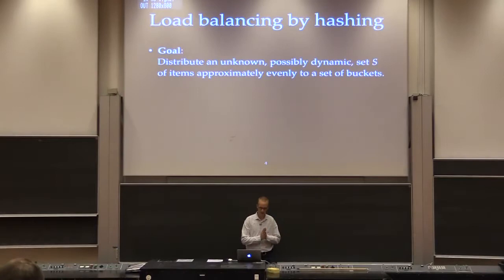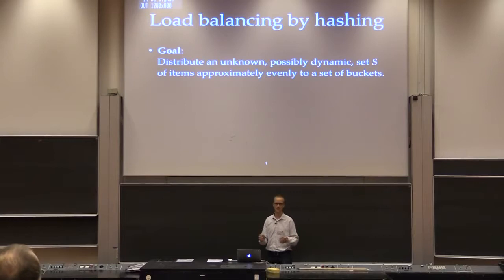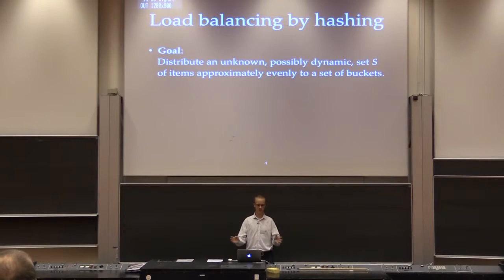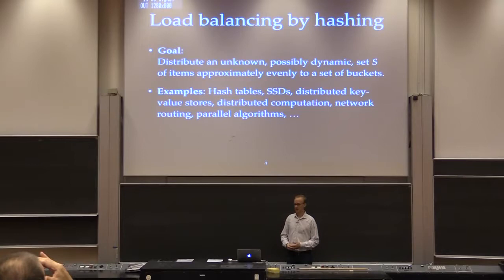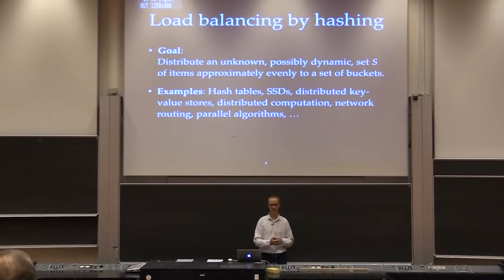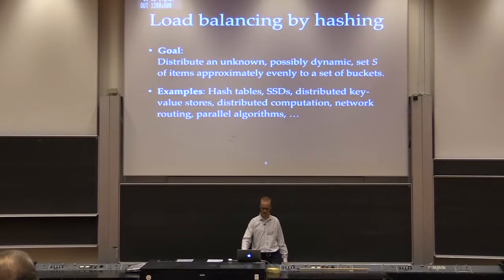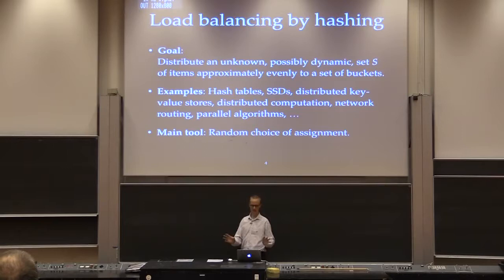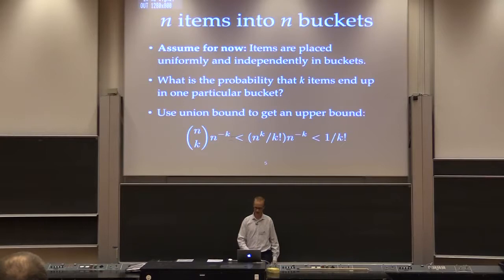Load balancing by example. We have some set of items that we want to distribute — this could be keys in a hash table, or it could be something else. We don't know what this set is going to be, and it's possible that this set is going to be dynamically changing. We want to distribute these items approximately evenly. This problem pops up in a lot of places: solid state drives, different kinds of distributed storage, key-value stores, but also computation. If you want to split computations into many parts, you need to do this kind of load balancing. One of the best ways of doing it is to make the assignments random, so you expect things will distribute nicely and evenly.